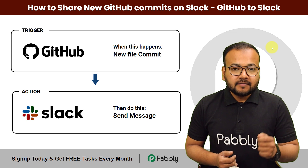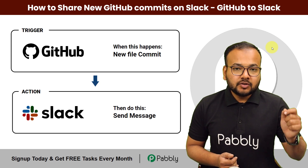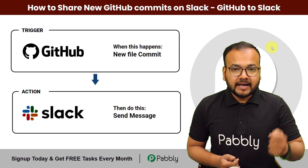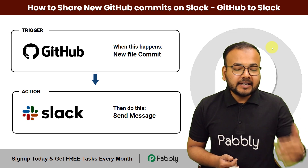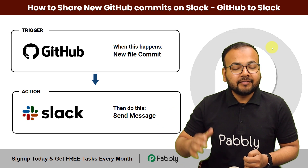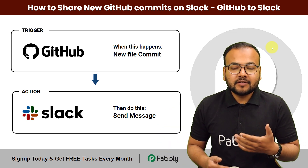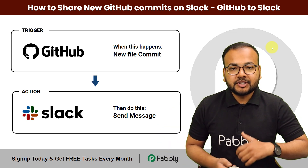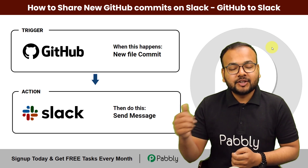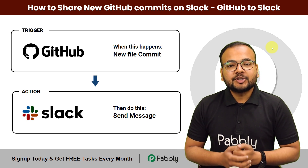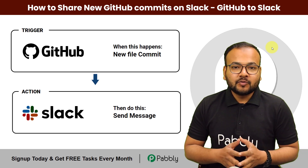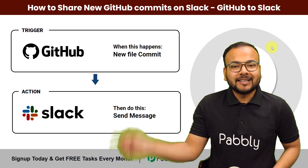With the help of this automation, you can send new commits of files and new update commits of files in GitHub to Slack in real time, making it easier for you to share your project's progress with your team. And we are going to set up this automation without any coding. So without any further ado, let's begin.